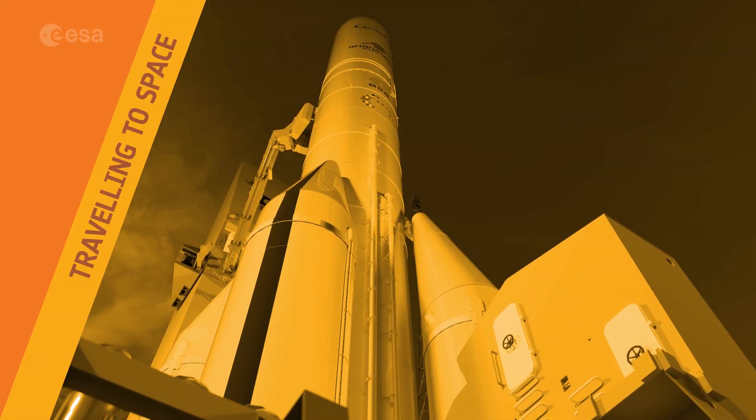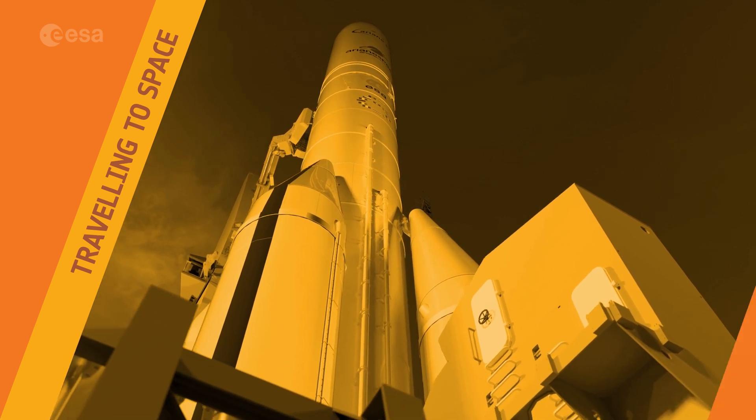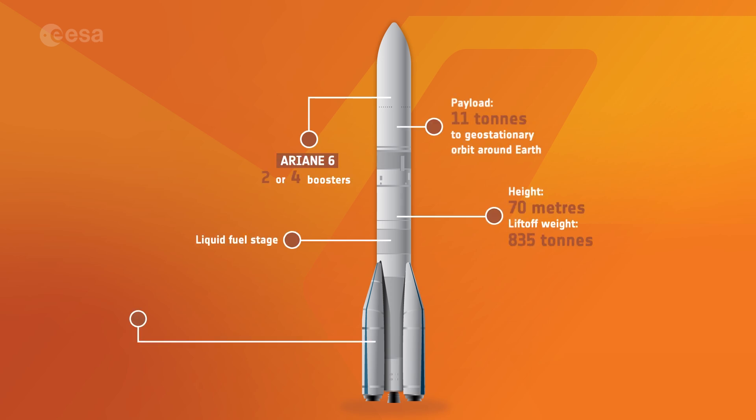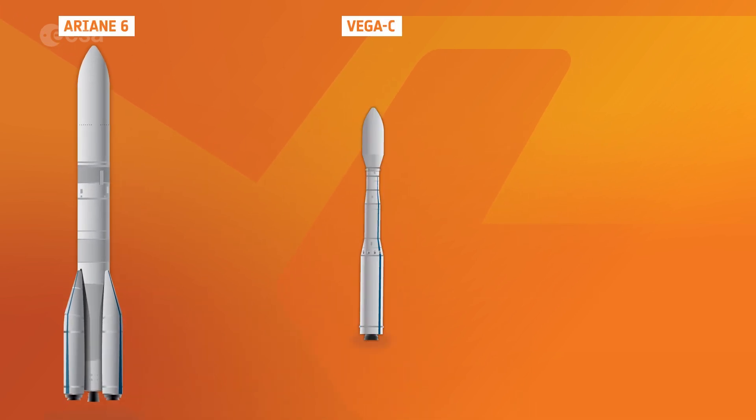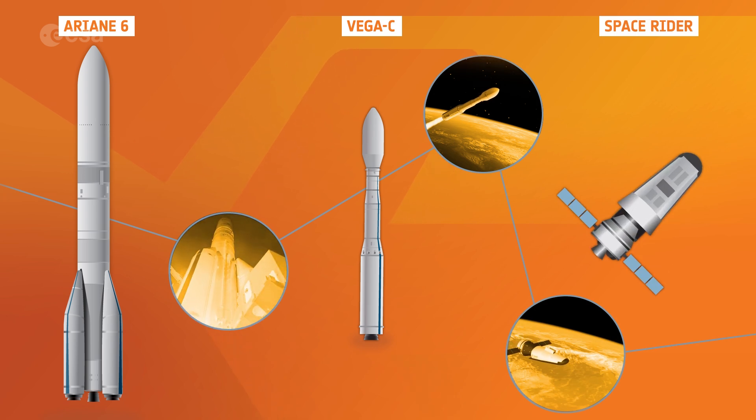Traveling to space reliably is at the heart of ESA's vision for space transportation. We launch rockets that carry satellites into orbit and are constantly improving the design of our next generation of launchers, Ariane 6 and Vega-C. These rockets and the reusable space rider will ensure that Europe continues to have autonomous and affordable access to space.